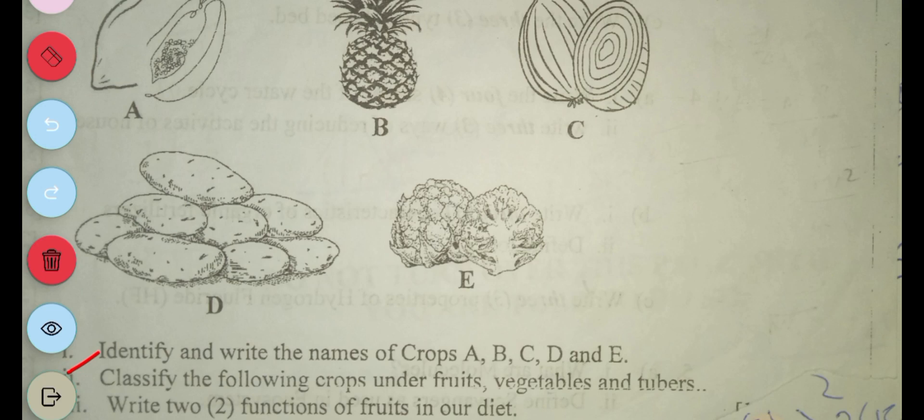So the first question says: identify and write the names of the crops A, B, C, D, and E.